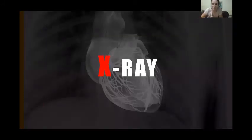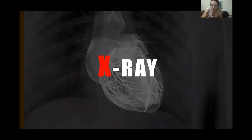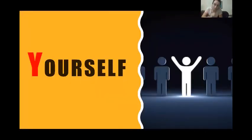X — X-ray. Look so hard that you can see to the heart. Look through things. A lot of what Pie Corbett has asked us to do here is to look through things — look so, so, so closely. Y — Yourself. Put yourself into your poems as well as the subject. Don't be afraid to say 'my name is M and I'm going to write a poem by M' — and put yourself in there.